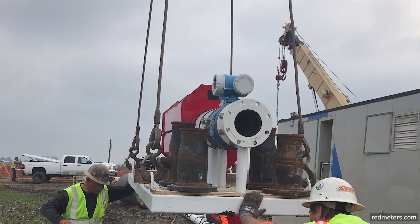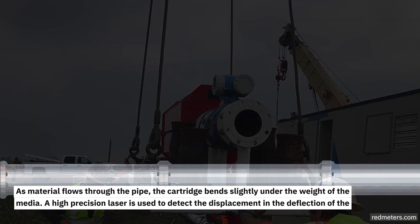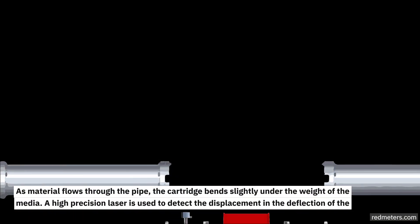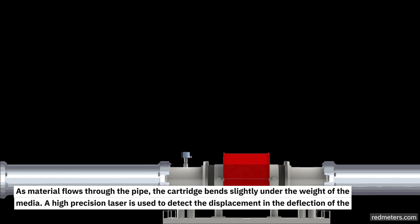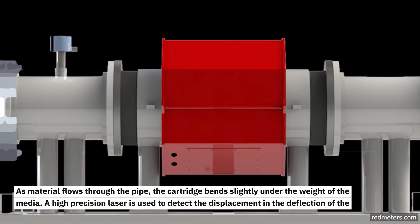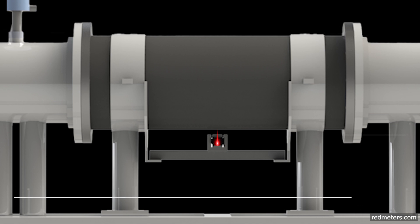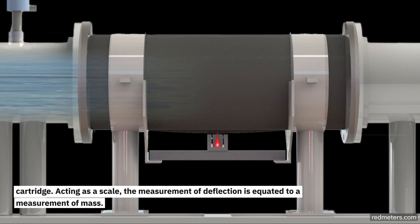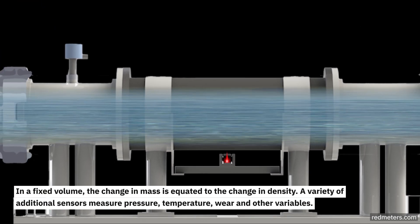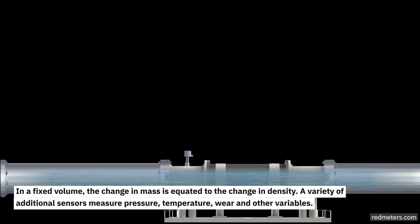As materials flow through the pipe, the cartridge bends slightly under the weight of the media. A high-precision laser is used to detect the displacement in the deflection of the cartridge. Acting as a scale, the measurement of deflection is equated to a measurement of mass in a fixed volume. The change in mass is equated to the change in density.